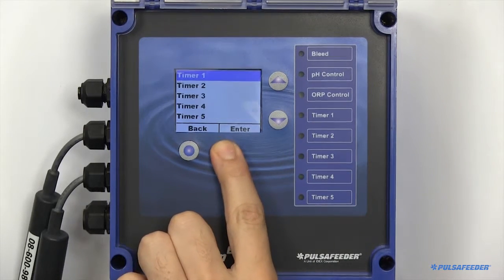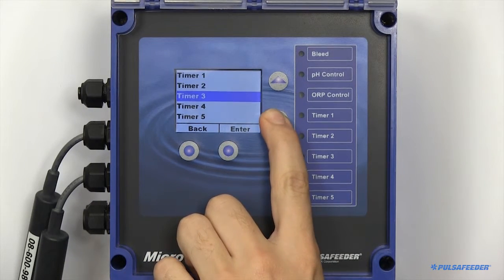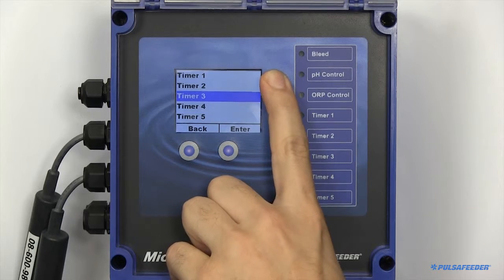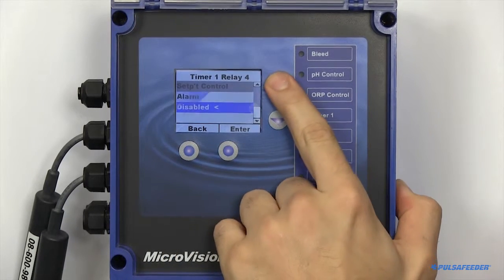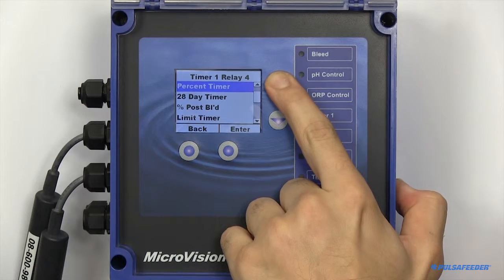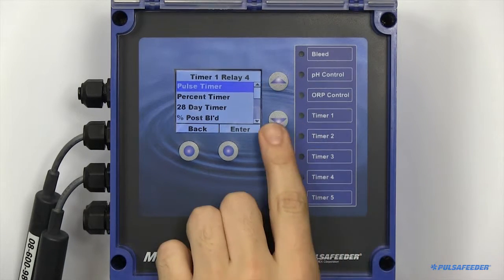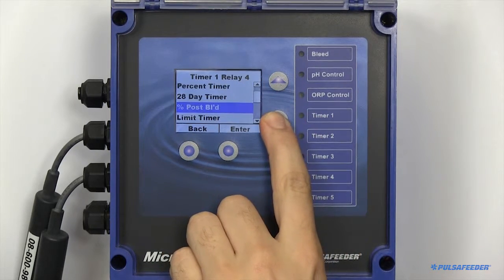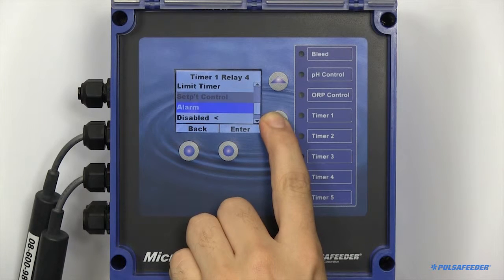The Timers page is where you will set up your remaining relays. The relays can be configured as pulse timers, percent timers, 28-day timers or biocides, percent post bleed, limit timer, or alarms.